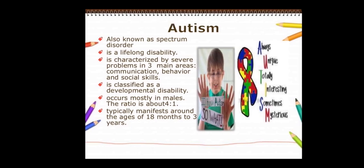Autism is classified as a developmental disability that occurs mostly in males. The ratio is about four to one — meaning autistic disorder occurs mainly in males, with approximately one in four being female. It typically manifests around the ages of 18 months to 3 years.